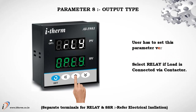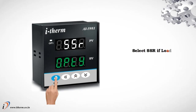Parameter 8: Output Type. The user must set this parameter carefully in accordance with the output used. Select Relay if the load is connected via contactor. Select SSR if the load is connected via SSR.